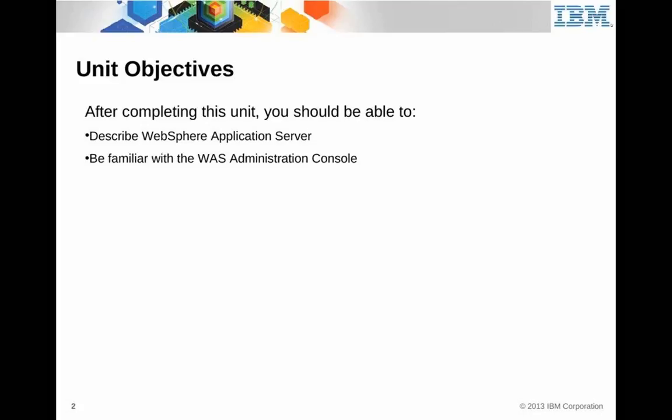WAAS is the name of the product. It's also used to refer to the actual process that runs the application code. WebSphere Application Server runs the application code. What a server is — a server is really a JVM, a Java Virtual Machine. WAAS has many, many JVMs running, and the JVMs are kind of coming and going depending upon what's needed. There's also a term called cluster, used to describe a group of servers within the WAAS environment.